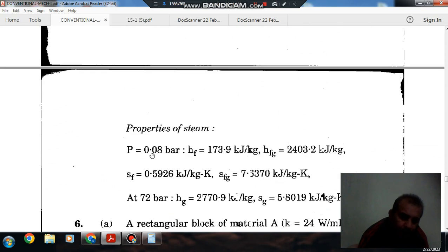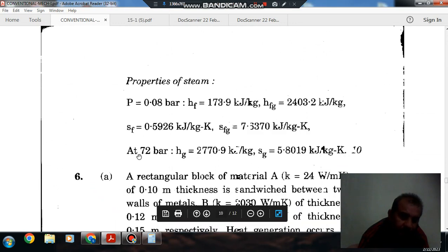Properties of steam at 0.08 bar—hf, hfg, sf, and sfg—are given. At 72 bar, hg and sg are given.